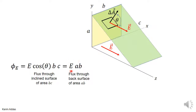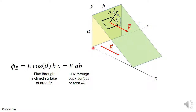E times A times B is nothing more than the electric flux through the back surface. We have just proved that the electric flux through the inclined surface — constructed so that all its corners project back onto the original surface — is exactly the same as the flux through the back surface.